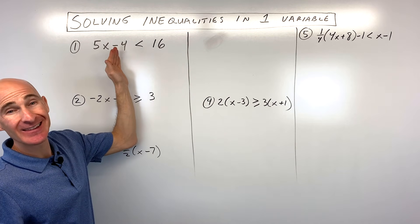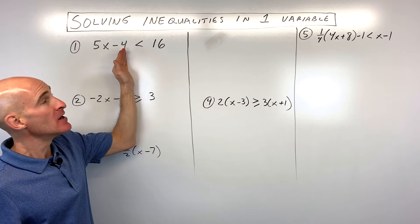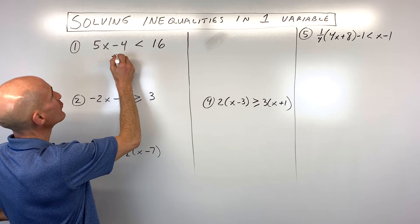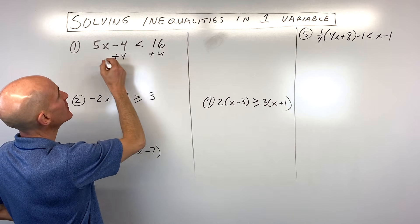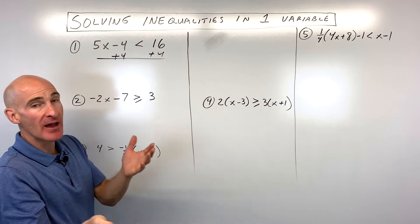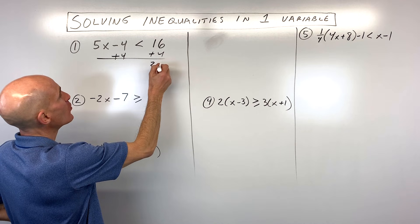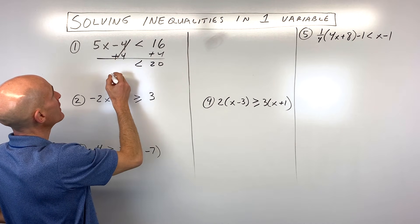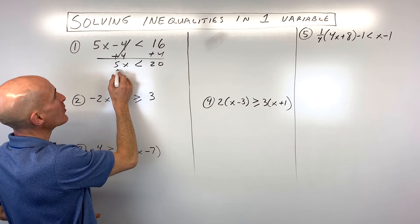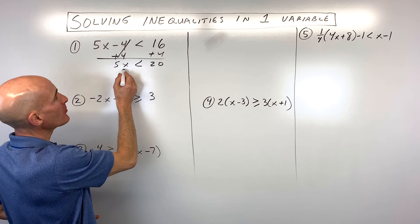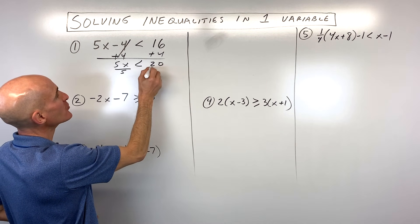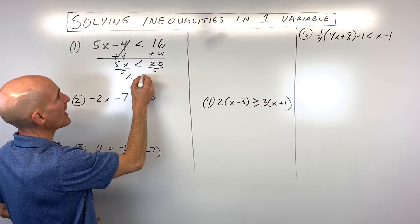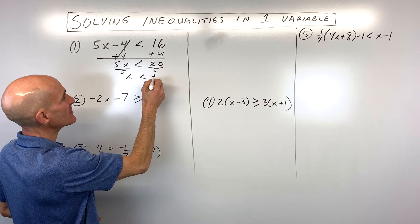Ideally, you want to get it on the left side. So let's start with this first one. What I'm going to do is I'm going to add four to both sides of the inequality to keep it balanced, so that's going to give us 20, and the four and negative four cancel out. The opposite of multiplying by five is to divide both sides by five, and that comes out to x is less than four.